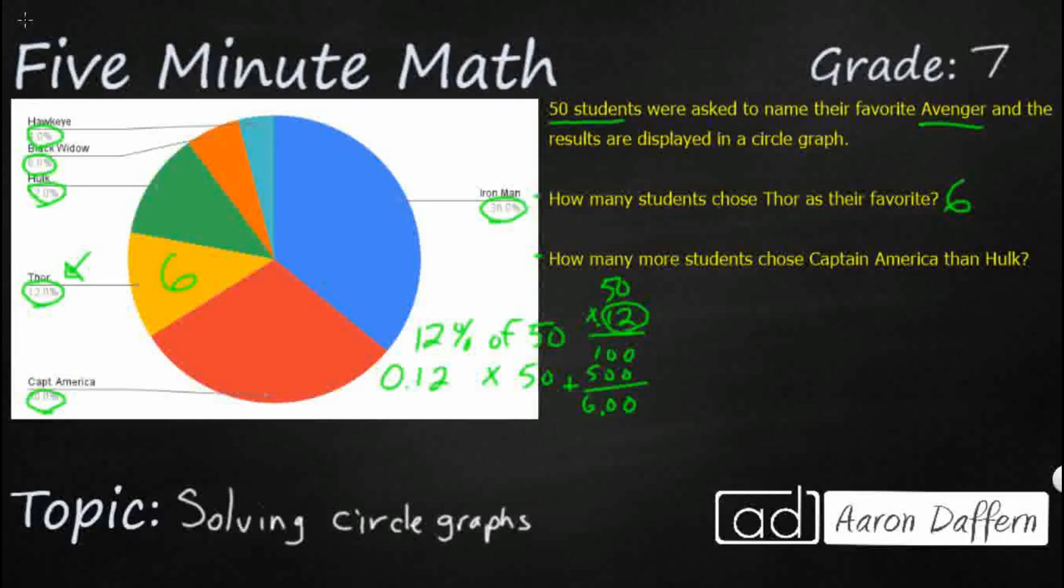Now the other way to do that is to take this 12% and instead of changing it to a decimal, we change it into a fraction. So 12% is really 12 over 100. And we can just do multiplication straight across. If we turn 50, which is a whole number into a fraction, any whole number could be changed into a fraction if you put it over 1. So 50 once,